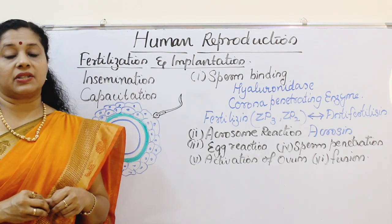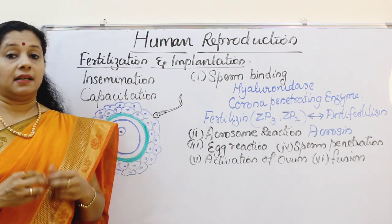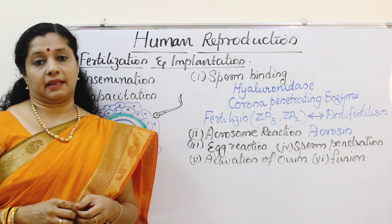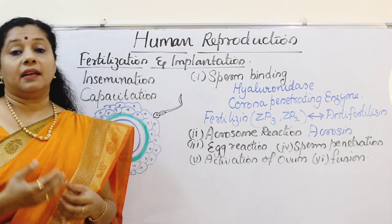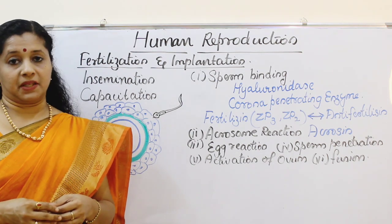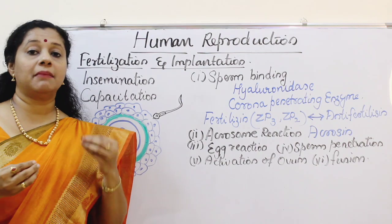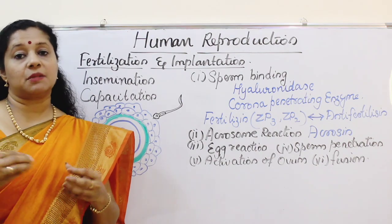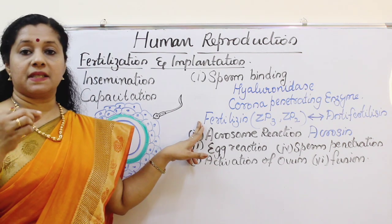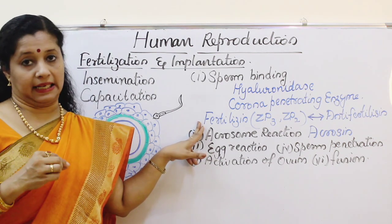The zona pellucida layer has certain receptive factors called fertilizins — Zp3 and Zp2 are the common ones — which are complementary to the anti-fertilizins present in the sperm. This is a compatibility reaction between sperm and ovum to ensure that the right sperm is fertilizing. Because of this, the sperm is now able to attach to the zona pellucida layer.